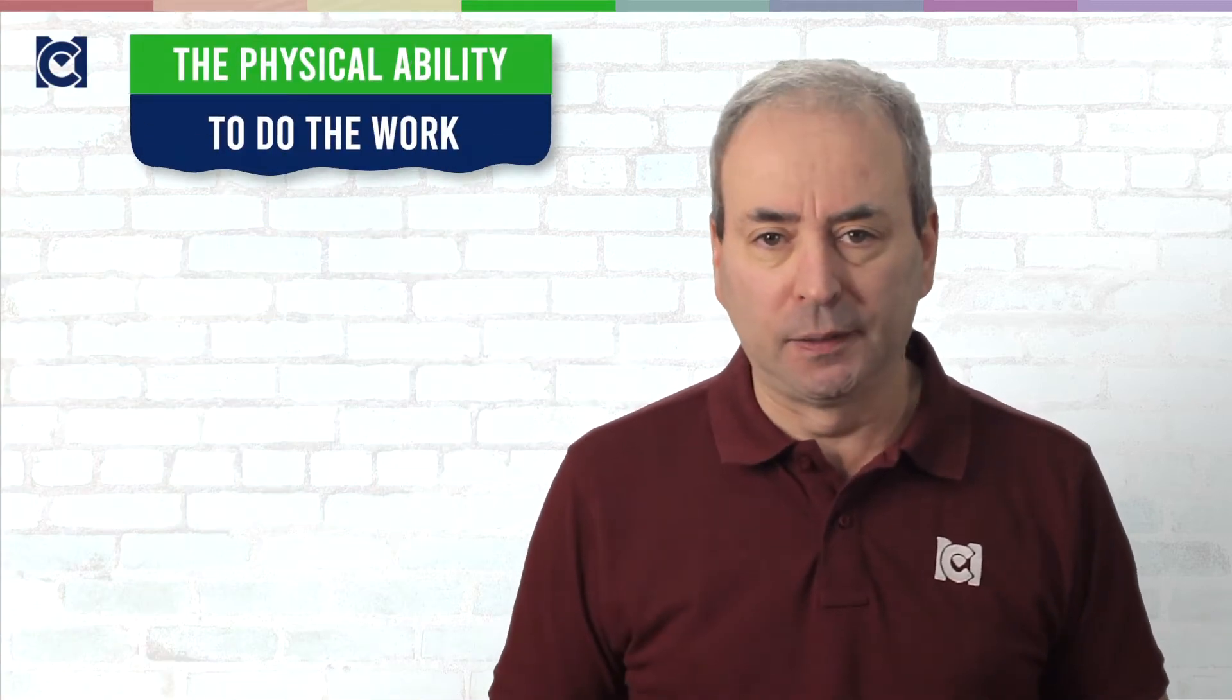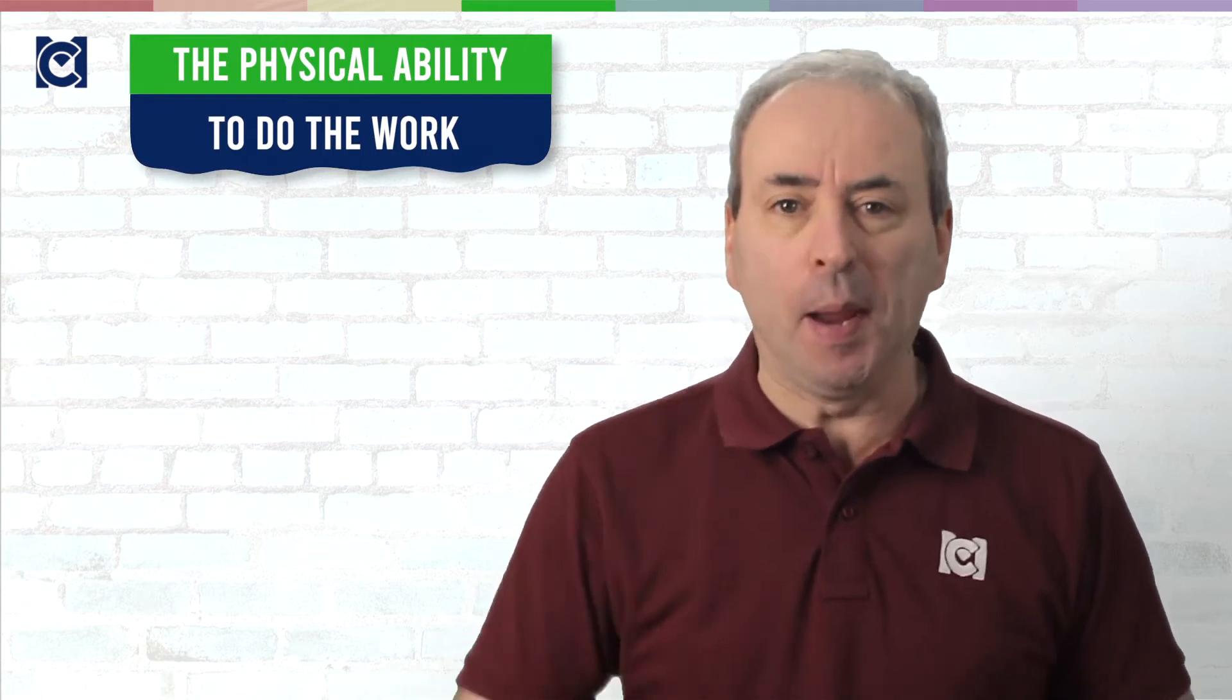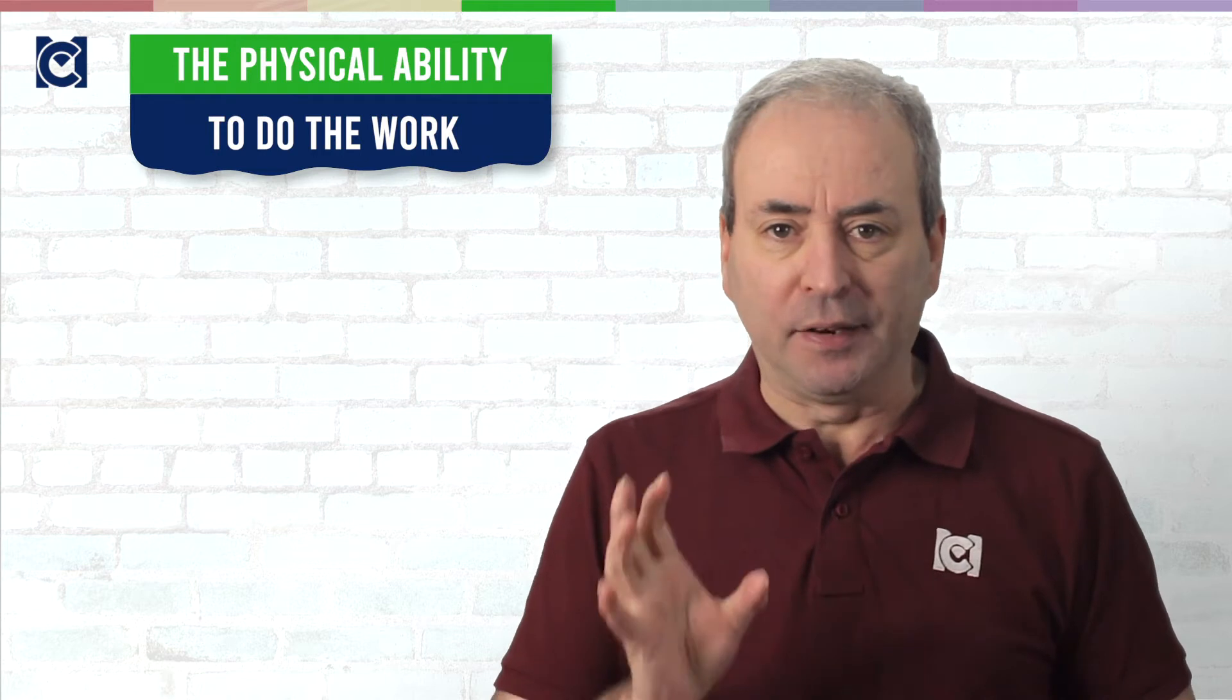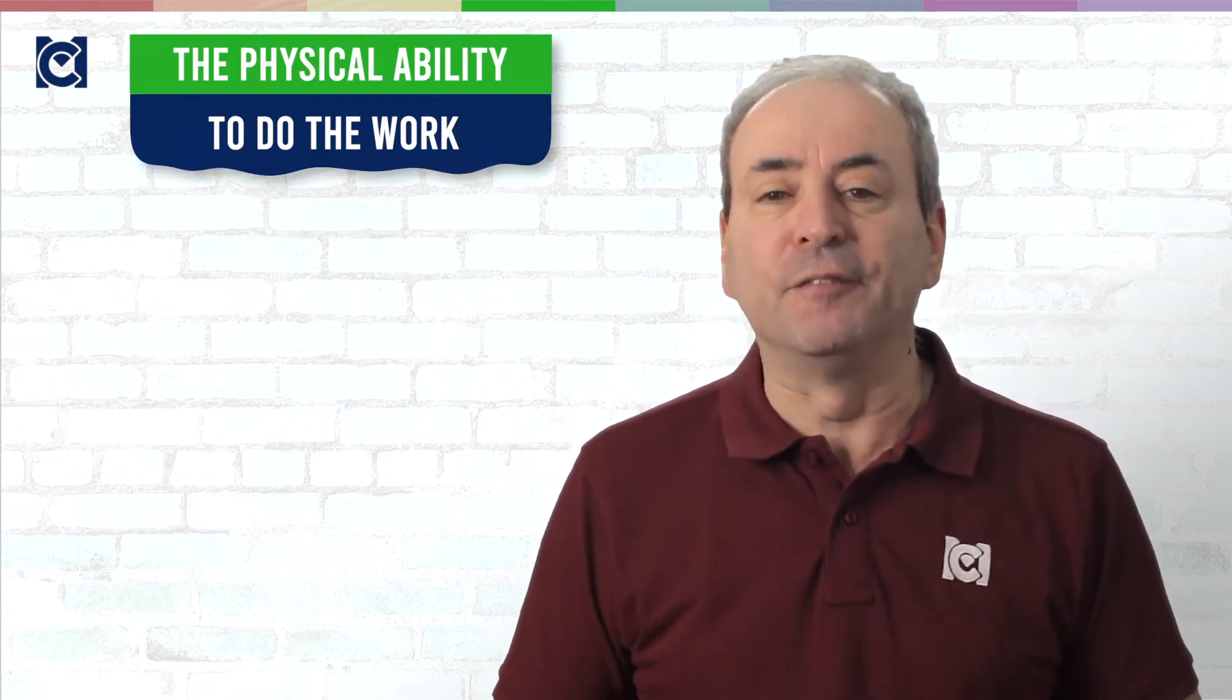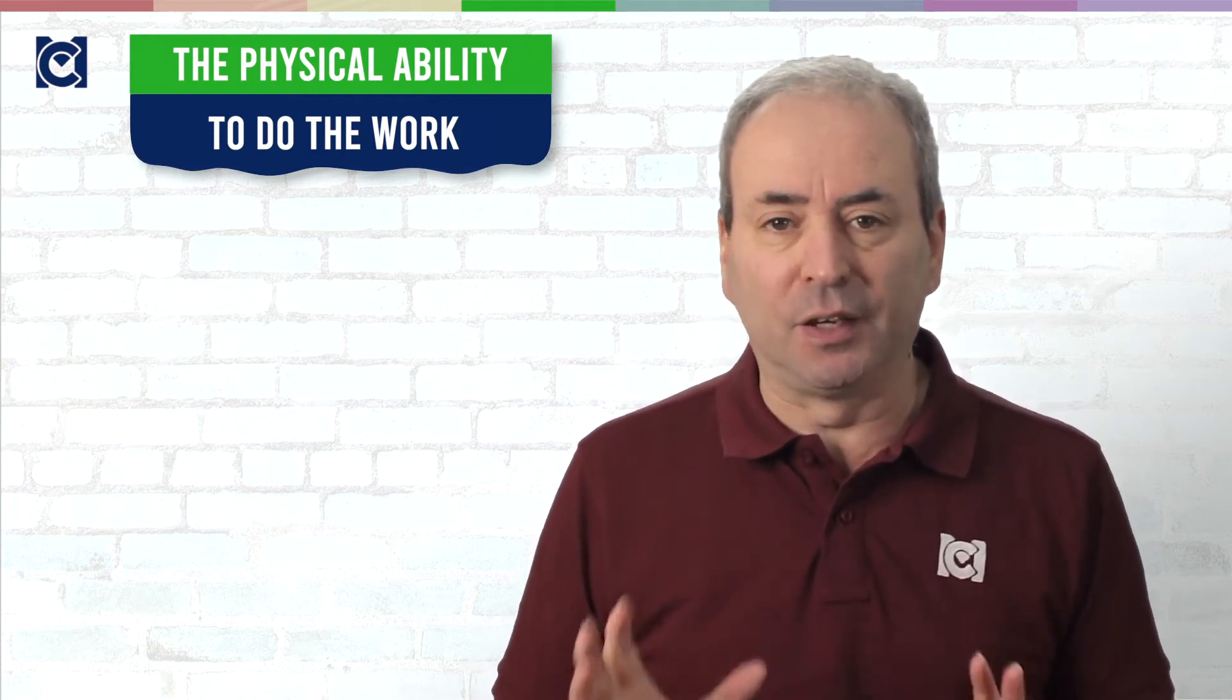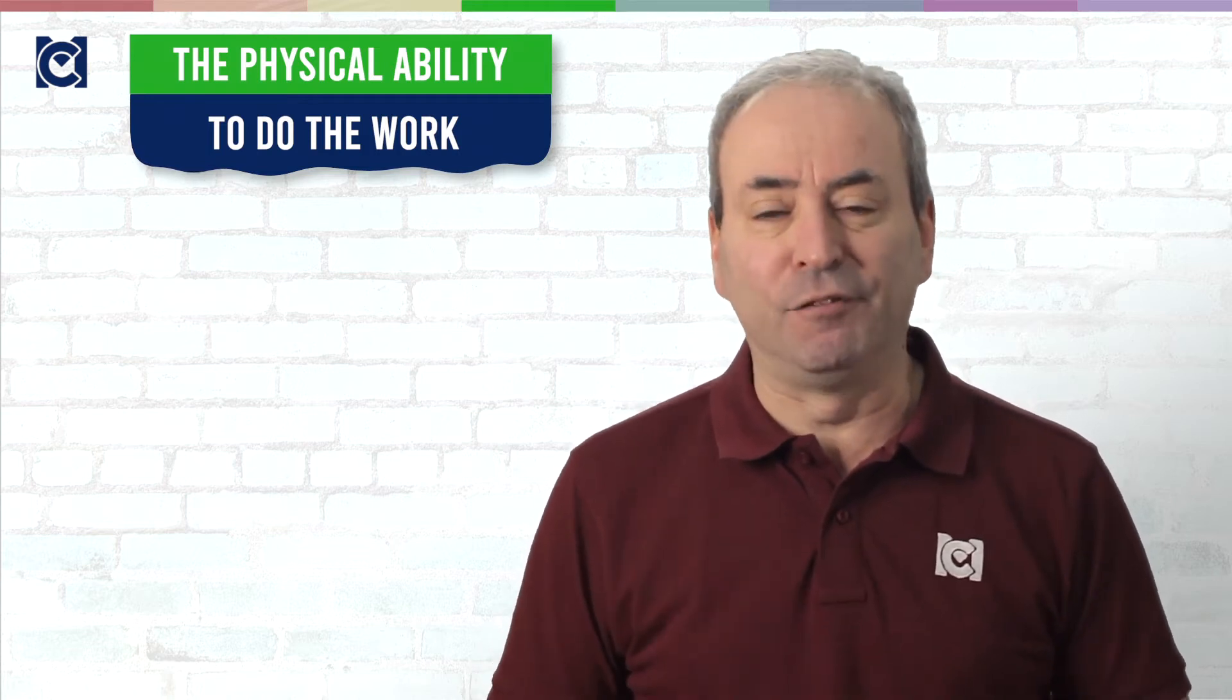Number one is the physical ability to do the work. Your team needs a workspace, it needs assets and equipment and tools to get the work done and you need to provide those things for the team and you need to make sure that they are fit for purpose. If your team is frustrated because it doesn't have any of those physical requirements, then you need to fix it for them.